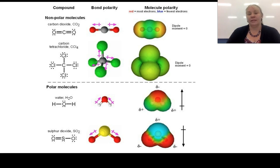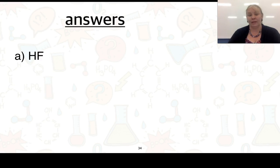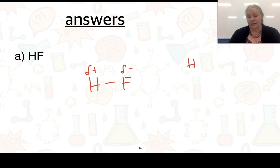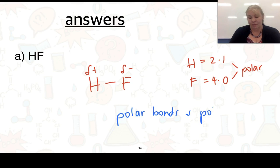Here are some diagrams also showing the symmetrical nature of non-polar molecules. For the exercise, starting with HF: hydrogen is 2.1 and fluorine is 4.0, giving a large difference, so the bond is definitely polar — delta negative on fluorine and delta positive on hydrogen. The molecule has a positive end and a negative end, so it has polar bonds and is a polar molecule.